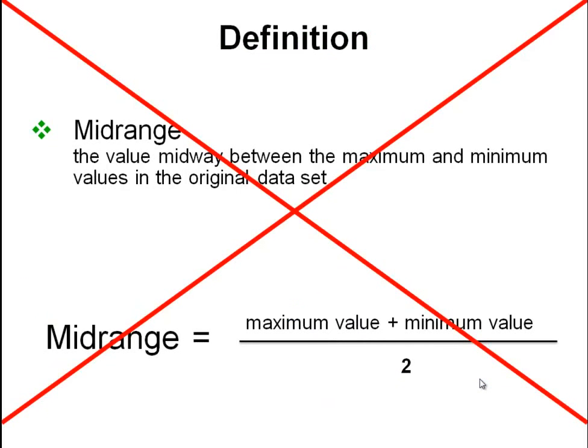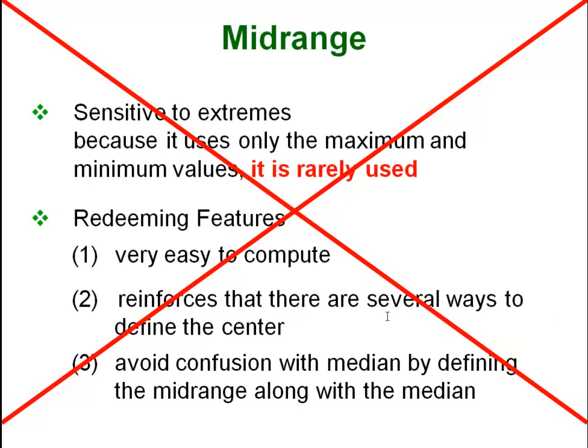Midrange is another measure of center. It is kind of a silly measure of center. It is not used a lot because it is hugely influenced by outliers. As you can see from the formula you take the maximum value, add the minimum value to it and then divide by 2. If you have outliers they are going to be your max or minimum values. So this number can get hugely skewed by outliers. Thus most people don't use it. I won't use it. We will be ignoring it.